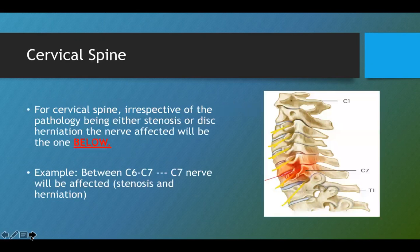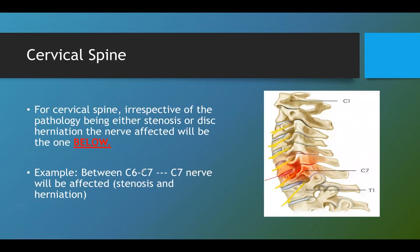Let's first discuss the cervical spine. What happens at the cervical spine is that irrespective of the pathology being stenosis or disc herniation, the nerve root in basic anatomy passes below the level. This means the nerve root affected is the one below, between the two levels.